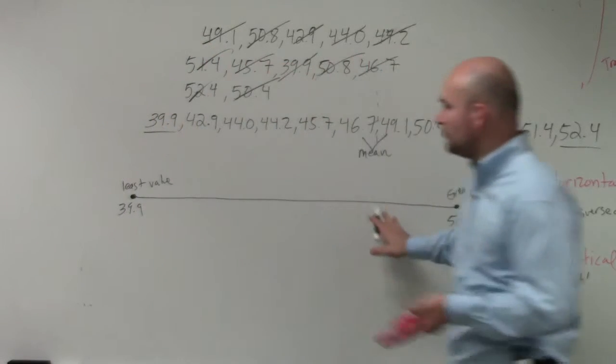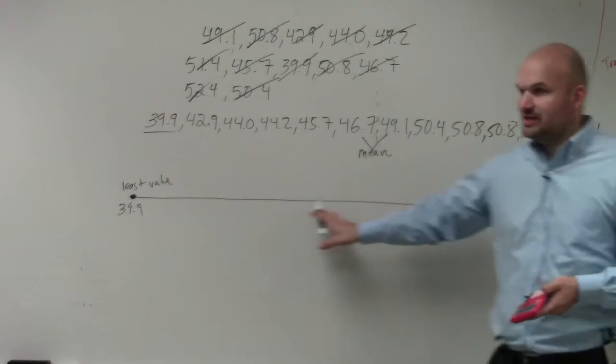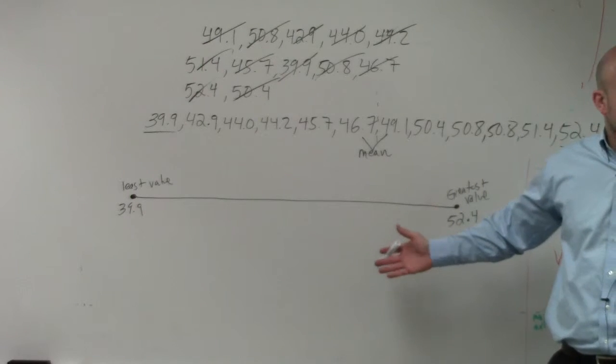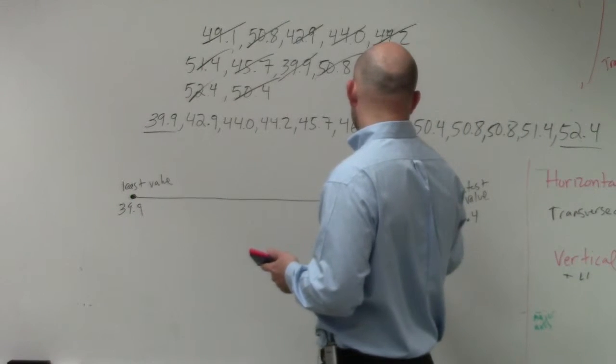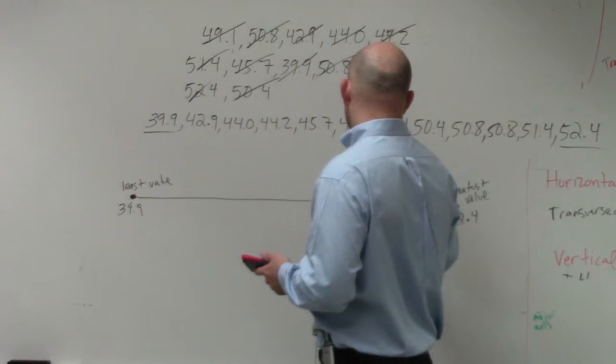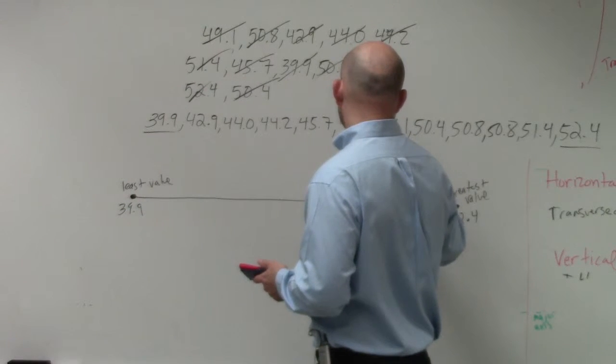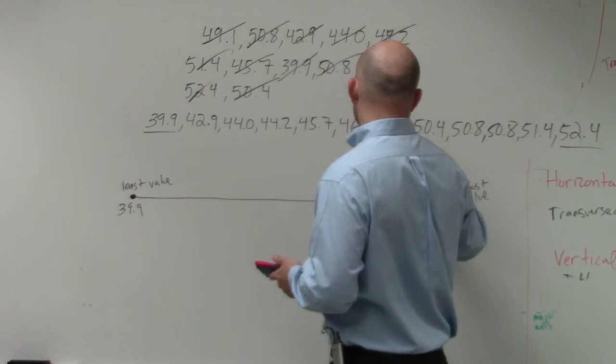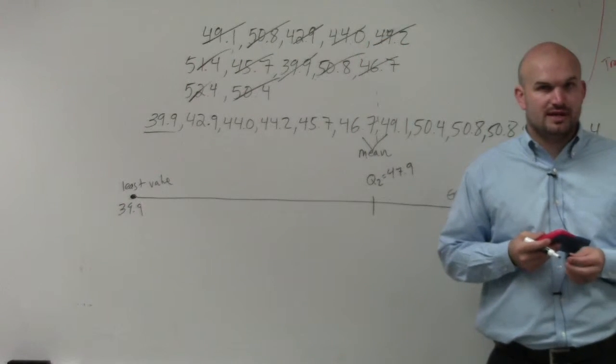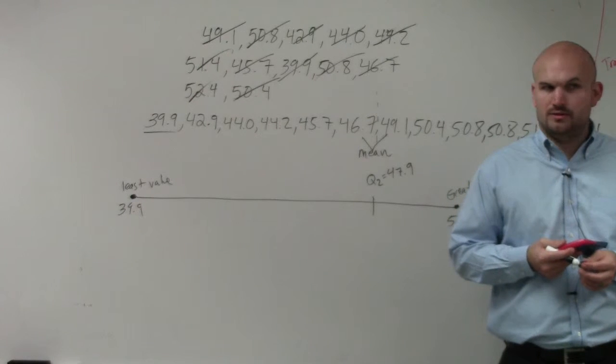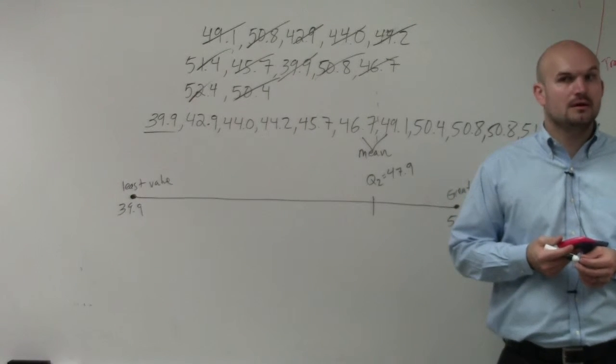Now, I want to put 47.9 relative on this kind of line as if you could think of this as like a number line. So 47.9, I'd probably roughly say is going to be maybe right there. Does everybody see what I did and understand what I did? Any questions?